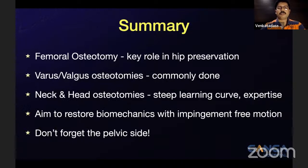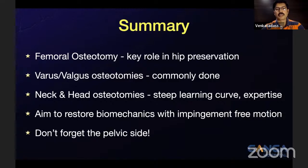To summarize: femoral osteotomies have a key role in hip preservation surgery and various options are available. Varus and valgus osteotomies are the most commonly performed — the workhorse procedures. Head and neck osteotomies have a steep learning curve with higher complication rates. The aim is to restore biomechanics with an impingement-free range of motion. Most importantly, do not forget the pelvic side — addressing only the femoral side may destabilize the hip joint, potentially leading to instability or dislocation.